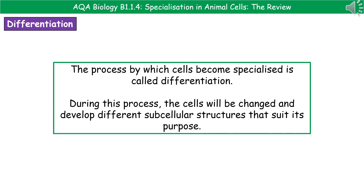The way in which these cells have become specialized is through a process called differentiation. During the process of differentiation, the cells are changed and develop different subcellular structures that are suited to their purpose. So when we actually look at some of these specialized cells, they don't necessarily look anything like that standard animal cell diagram that we've all learned in a previous video.